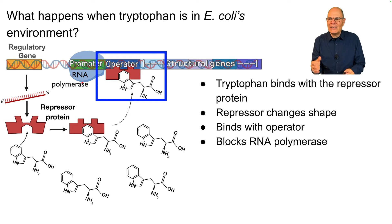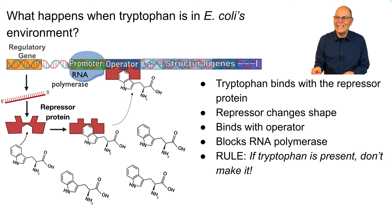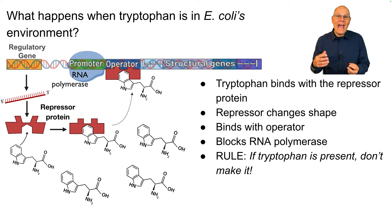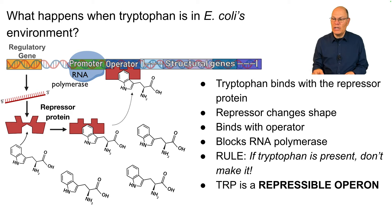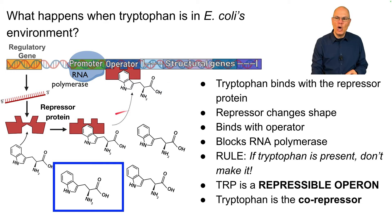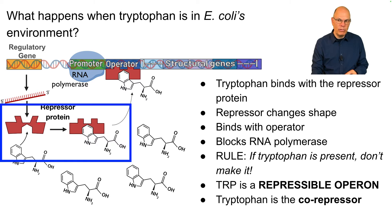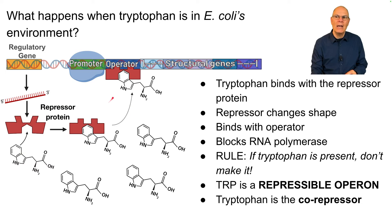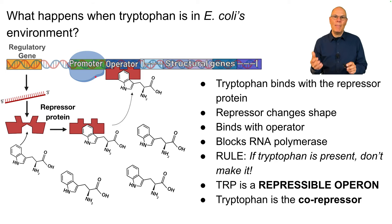That makes a lot of sense. The basic rule is: if tryptophan is present, don't make it. It's an adaptation for saving energy. Trp is therefore called a repressible operon, and tryptophan is the co-repressor. This protein, when it binds with tryptophan, blocks the operator, repressing the system. Transcription becomes impossible. That's the trp operon.